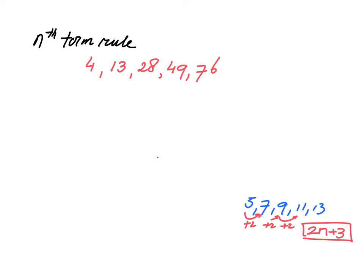A different sequence: if I have 3, 9, 27, 81. To find the nth term rule, you notice there's not a constant addition. However, there is a constant multiplication, so it's a geometric sequence. That is times 3, times 3, times 3.